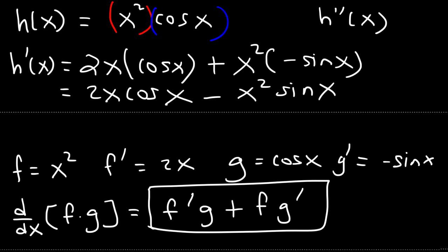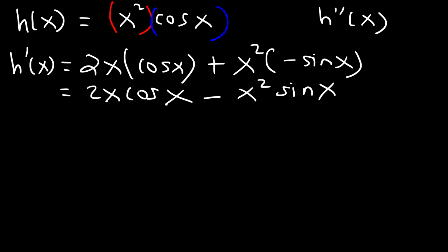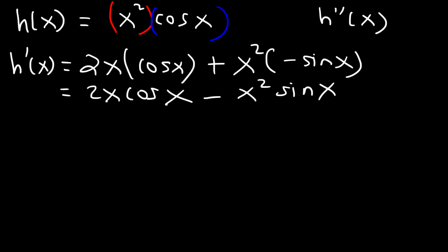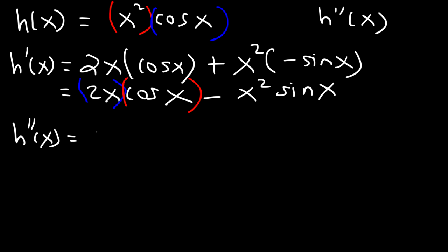Now let's go ahead and find the second derivative. We're going to have to use the product rule twice, for this term and for that one. So for the first term, let's separate it into two functions. So h double prime is going to be the derivative of the first part — the derivative of 2x is 2 — and then times the second part, which we're going to leave the same: cosine.